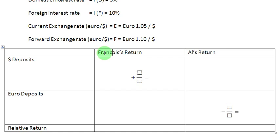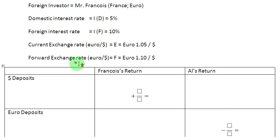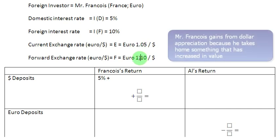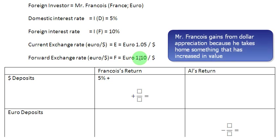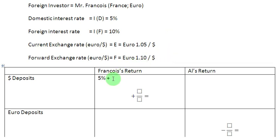Let us go to Mr. Francois first, who has decided to bring his money to the United States and invest in dollar deposits. If he does that, he is going to earn a 5 percent interest rate. And if you observe, the euro has been depreciating during this time period — it has moved from 1.05 to 1.10. So by the time Mr. Francois is ready to take his money back to his own country, he finds that the euro has depreciated; in other words, the dollar has appreciated. Mr. Francois is going to gain because of this dollar appreciation, because when he converts these dollars back to euros, he is going to get more euros.